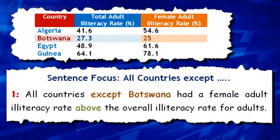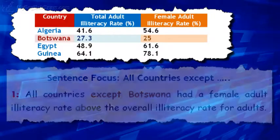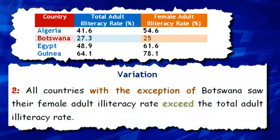All countries except Botswana had a female adult illiteracy rate above the overall illiteracy rate for adults. All countries, with the exception of Botswana, saw their female adult illiteracy rate exceed the total adult illiteracy rate.